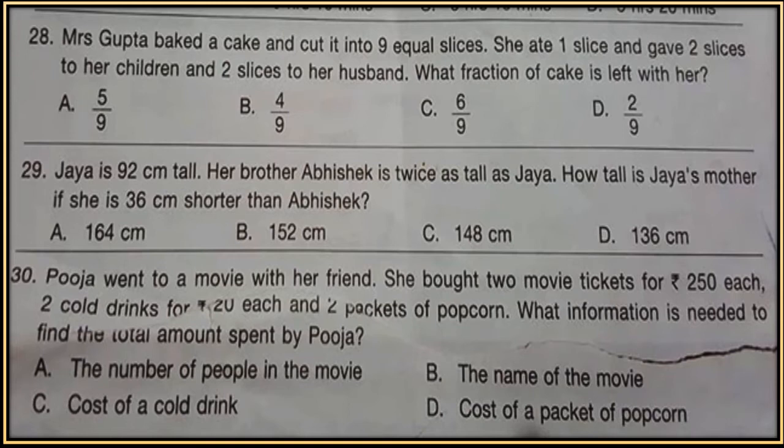Question 29. Jaya is 92 cm tall. Her brother Abhishek is twice as tall as Jaya. Mother is 36 cm shorter than Abhishek. How tall is Jaya's mother?